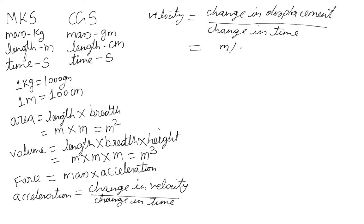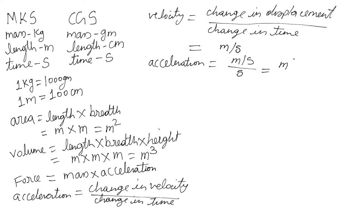So using the formula — velocity equals change in displacement divided by change in time — we arrive at the unit for velocity: meters per second. You can always use a formula to derive units for any physical quantity. For acceleration, which is change in velocity divided by change in time: velocity is in meters per second, so change in velocity is meters per second divided by seconds, which gives meters per second squared. So we now have units for acceleration as well.